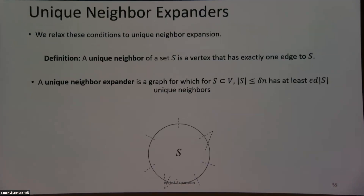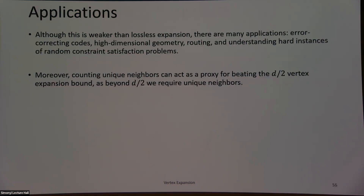Instead of looking for a lossless vertex expander, we can think about a unique neighbor expander. A unique neighbor of a set S is a vertex that has exactly one edge to S. A unique neighbor expander is a graph where a constant fraction of its neighbors are unique neighbors. Basically, I ignore everything to which S has multiple edges, and focus only on vertices to which S has exactly one edge.